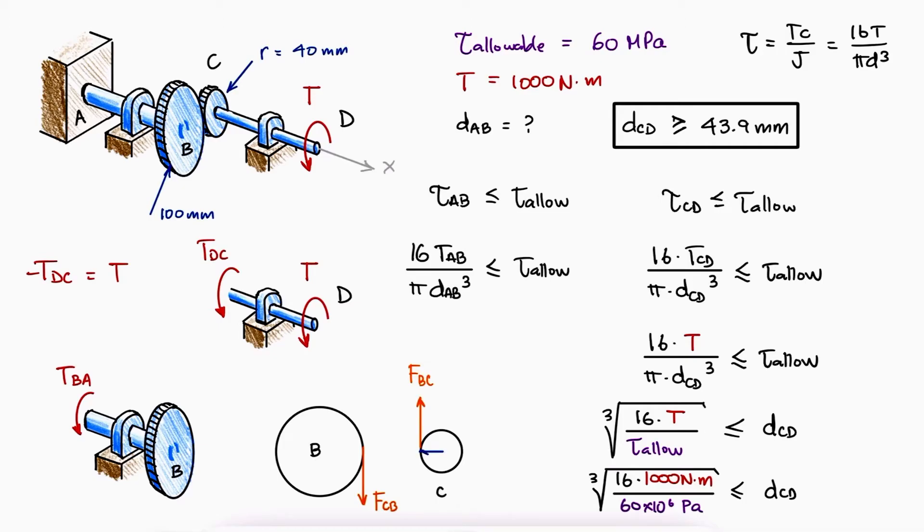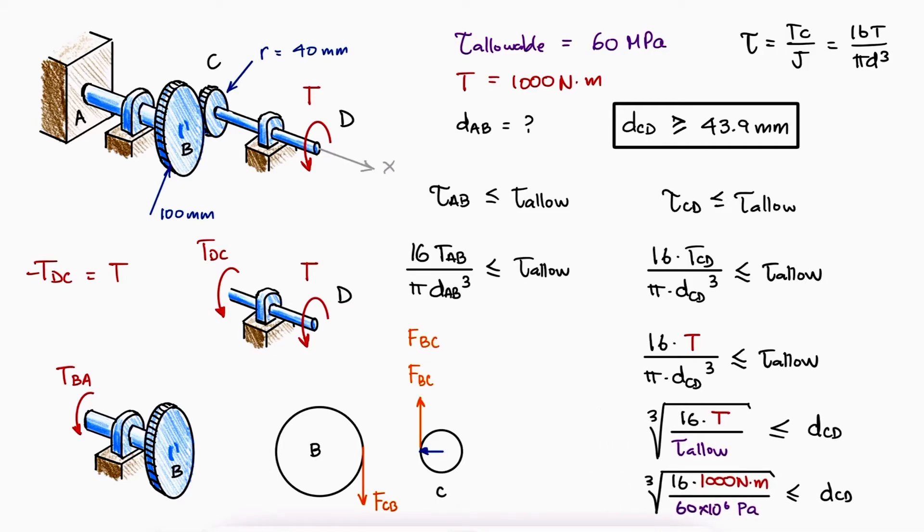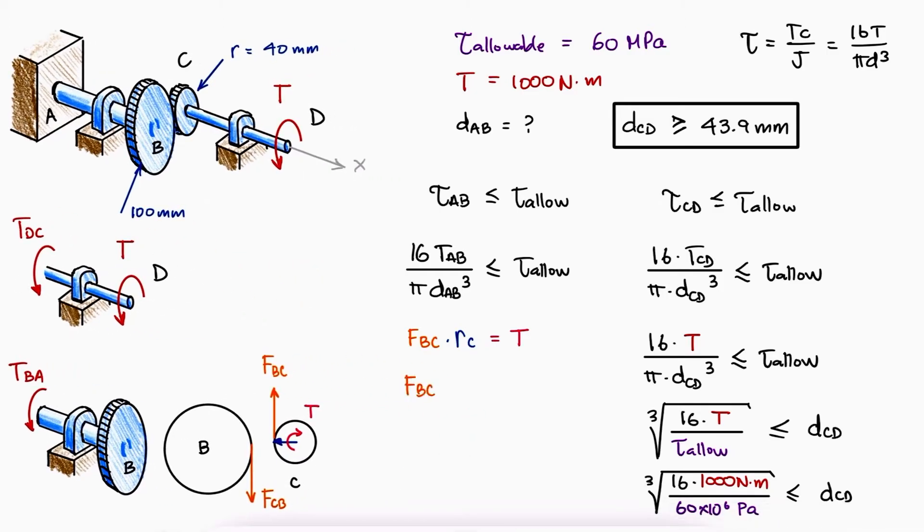The action reaction would show us that B exerts a force on C in the opposite direction. This force FBC multiplied by the radius of gear C creates a torque that has to be of equal magnitude to the external torque for shaft CD to not be moving. This means that FBC and therefore FCB are equal to T over RC.